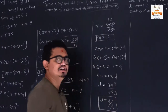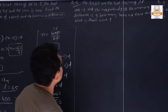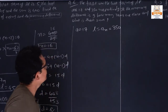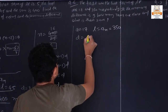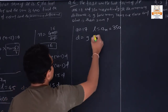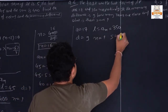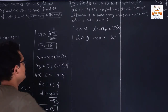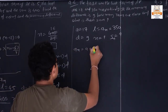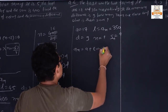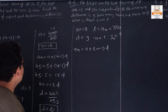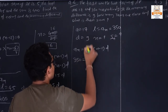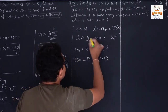Question number 6: The first term is 17 and the last term is 350. The common difference d = 9. We need to find how many terms there are (n) and what is their sum (Sn). We use the formula an = a + (n−1)×d. The last term is 350, a = 17, d = 9.